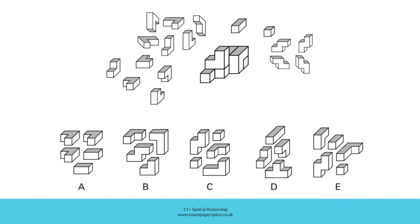In option D, there is a T-shaped block. That T-shaped block could be positioned here, with an L-shaped block sitting on top of it. Another L-shaped block could be positioned here. However, we would then need a shorter cuboid to be in this position, and we only have a longer cuboid in D. Although that longer cuboid could be positioned towards the back of the figure, we still require a further block to complete the figure properly. D therefore is incorrect.